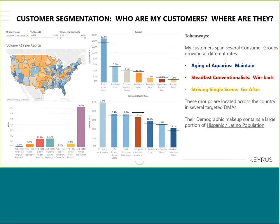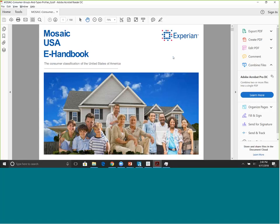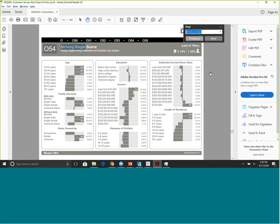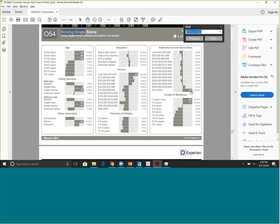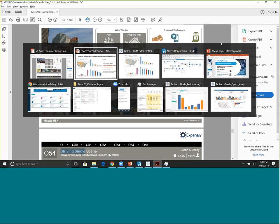We've identified three demographic groups to go after: the 'Aging of Aquarius' people - we want to maintain them, they're our biggest group. The 'TEDx Conventionalists' - we're really losing them, so we have to go back after them. And a new group coming up - the 'Striving Single Seed.' If I wanted to understand what these groups are composed of, the Experian mosaic PDF gives me all kinds of information about who they are and what media and channels best speak to them. That could help me develop a marketing strategy to these people.